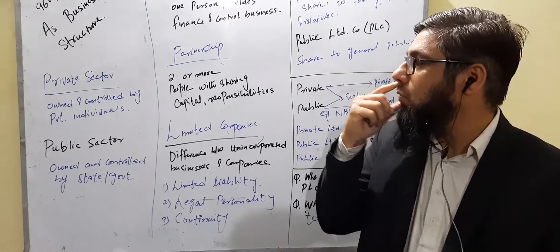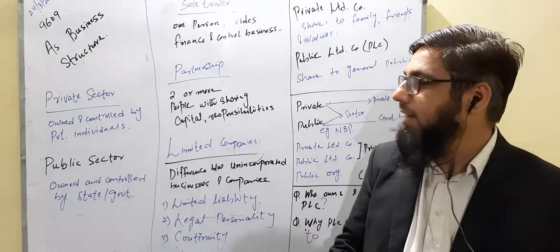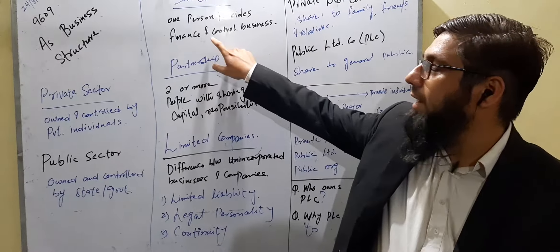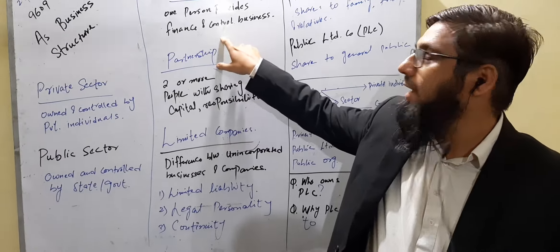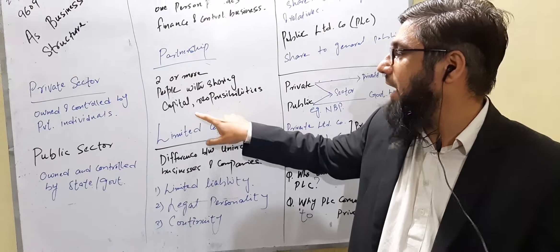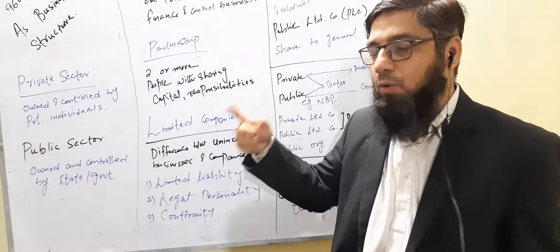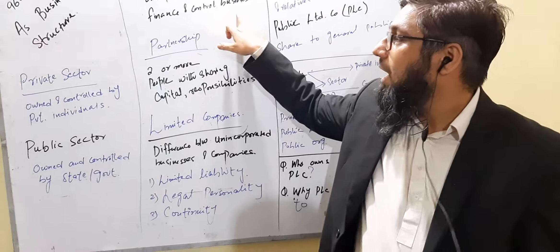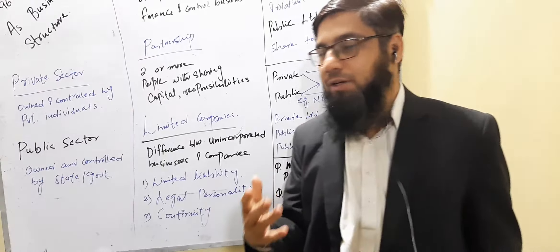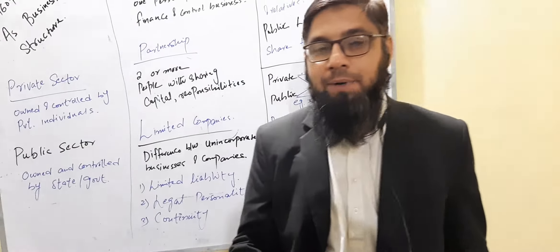In business organizations there are different types of organizations. We'll talk about sole trader and partnership quite quickly because these are easy concepts you may have heard earlier. A sole trader is one person who provides finance and controls the business. A partnership involves two or more people sharing capital and responsibility.